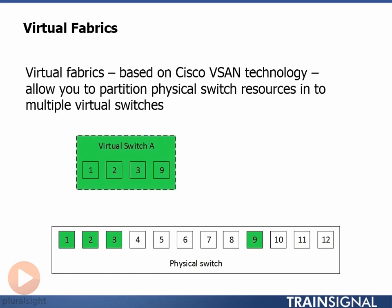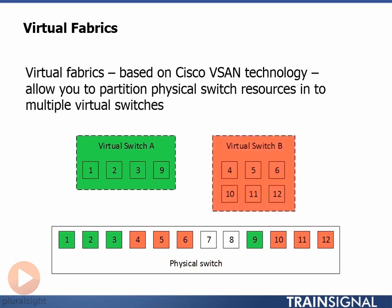Now let's create a second virtual switch. This time we'll pick ports 4, 5, 6, 10, 11 and 12, and we create them as Virtual Switch B. Now we've got two virtual switches, each with its own management IP and full set of fabric services — name server, zoning database, the lot.